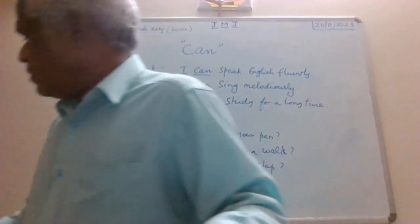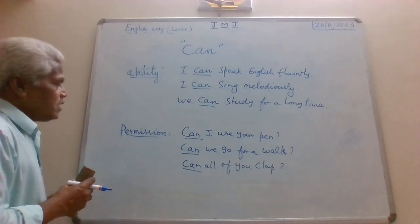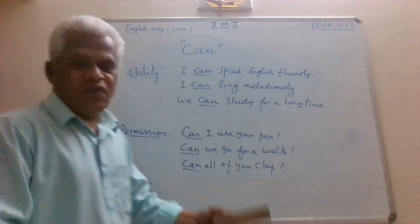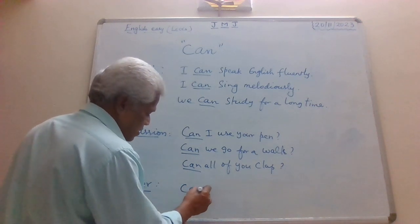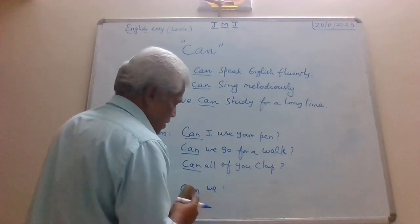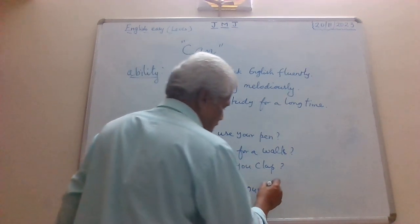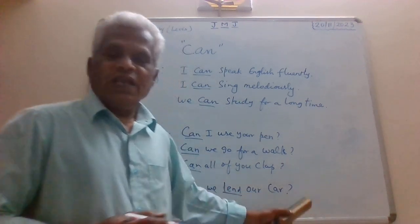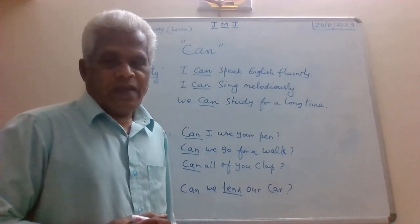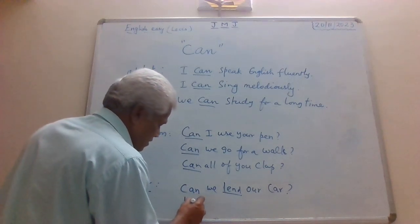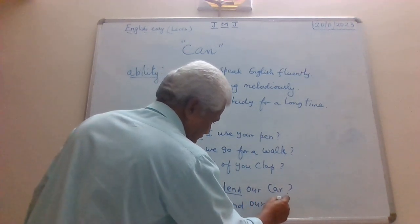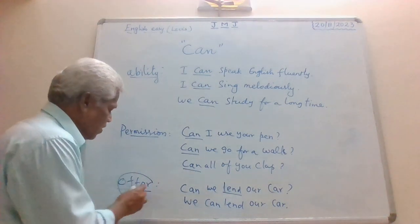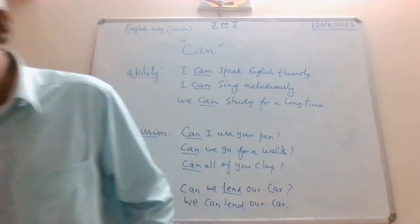The third use could be offering. CAN can help us to make an offer. For example, 'Can we lend our car?' — that is offering. Of course, it may look like a question again, but you can make it a statement also: 'We can lend our car.' So it can be a statement as well. This is the third use — offer. The verb CAN can help us to make offers.